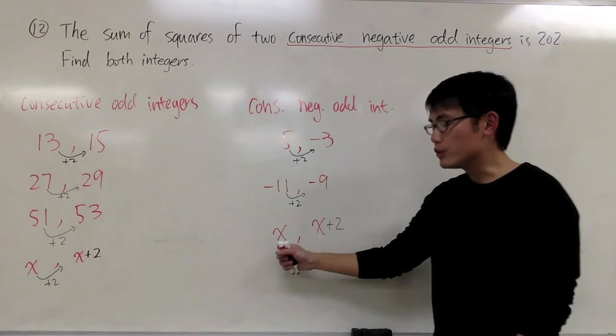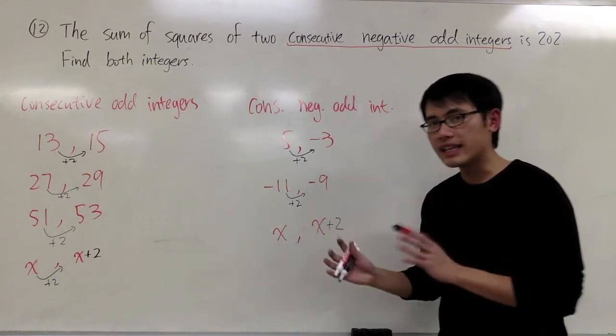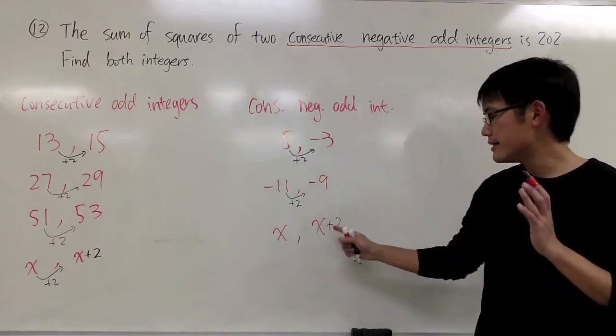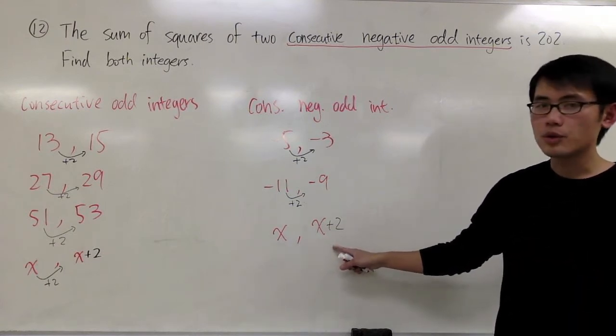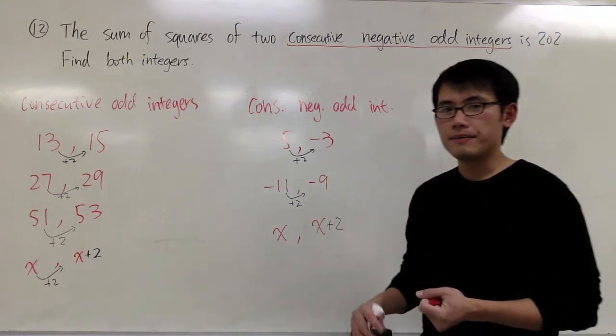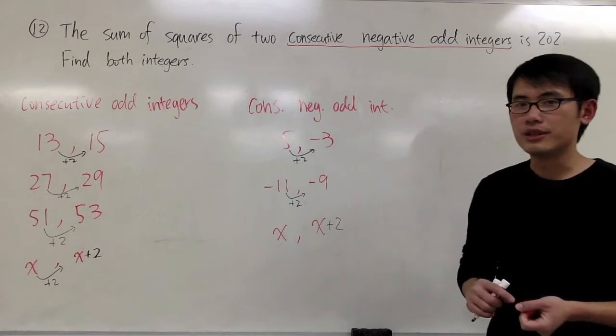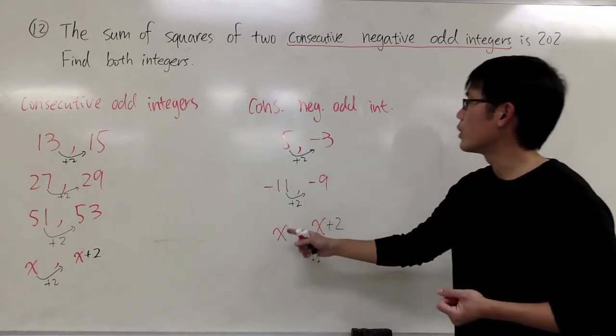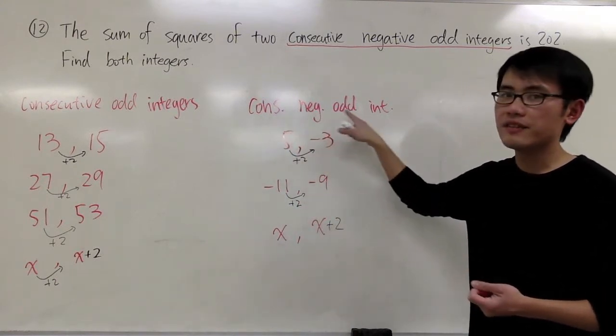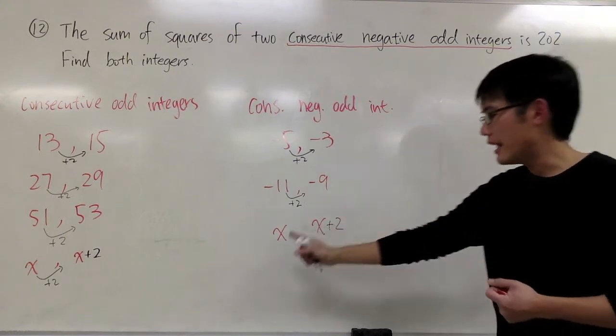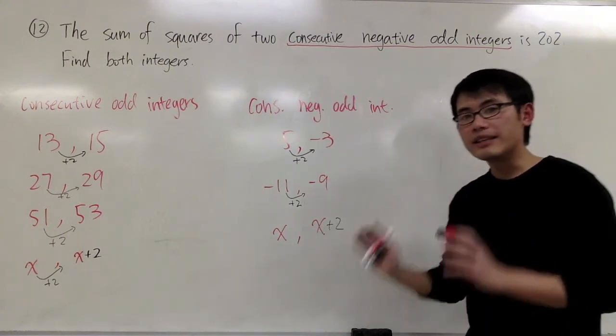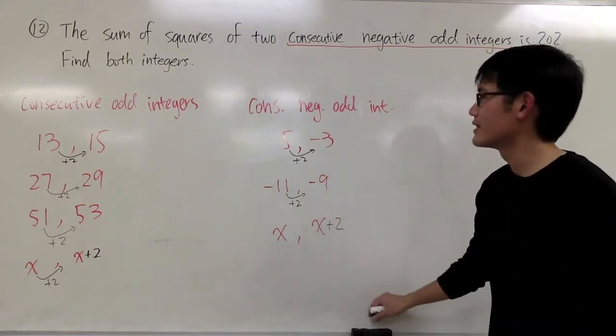So, we're going to use x for my first negative odd integer, and x plus 2 will be my next negative odd integer. And those will be what we call the consecutive negative odd integers. x and x plus 2. I don't know what they are yet, we're going to solve it.